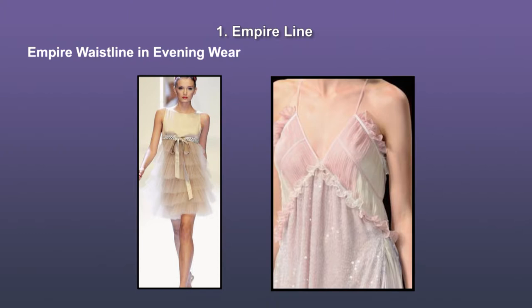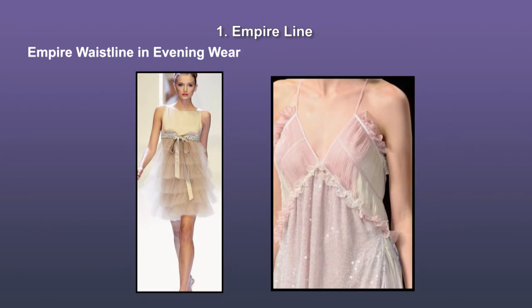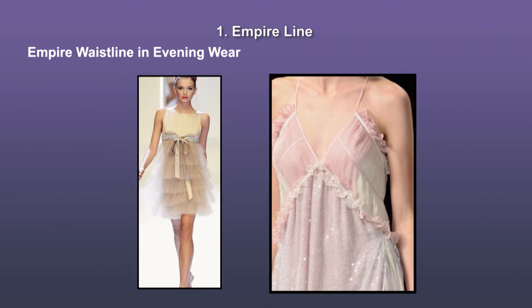Let us look at the empire waistline occurrences on the runway. The picture here is from Valentino's fashion show. The bodice ends just below the bust and the waistline has an attractive belt with a bow tied in the center. The skirt has frilly gathers. The second one is from Blue Marine Spring Summer 2013 ready to wear. The waistline starts just below the bust but tapers down into a V shape. The ruffling detail at the waistline adds an attractive feature.